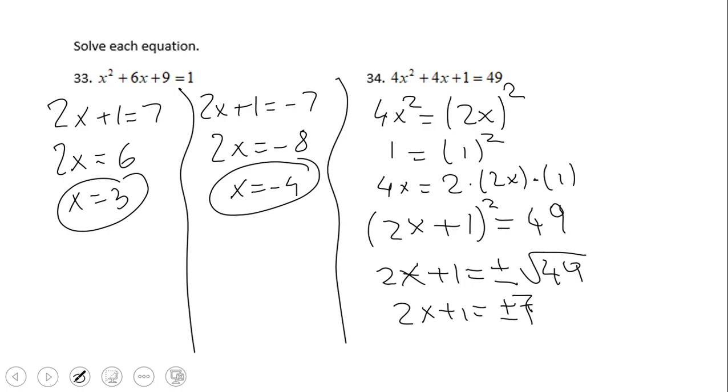And you notice here I checked if this trinomial is a perfect square, which it is. This is the perfect square, the quantity (2x+1)² = 49. We take square root and we end up with 2x+1 equals plus or minus square root of 49, which is nothing else than 7. We have the two equations and we solve this linear equation and end up with these two solutions.